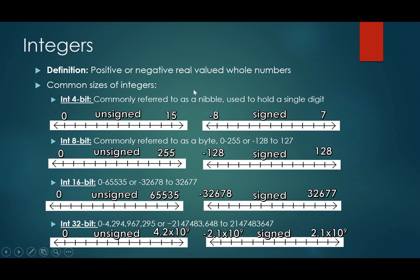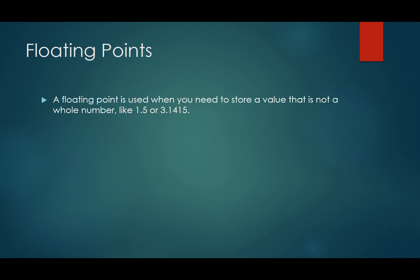So what if you don't want to store a real valued whole number? Well, if you have a decimal point, you're going to need something called a floating point. A floating point is used when you want to store a value that is not a whole number, so something like 1.5 or 3.1415. If you have a decimal point, you need a floating point.